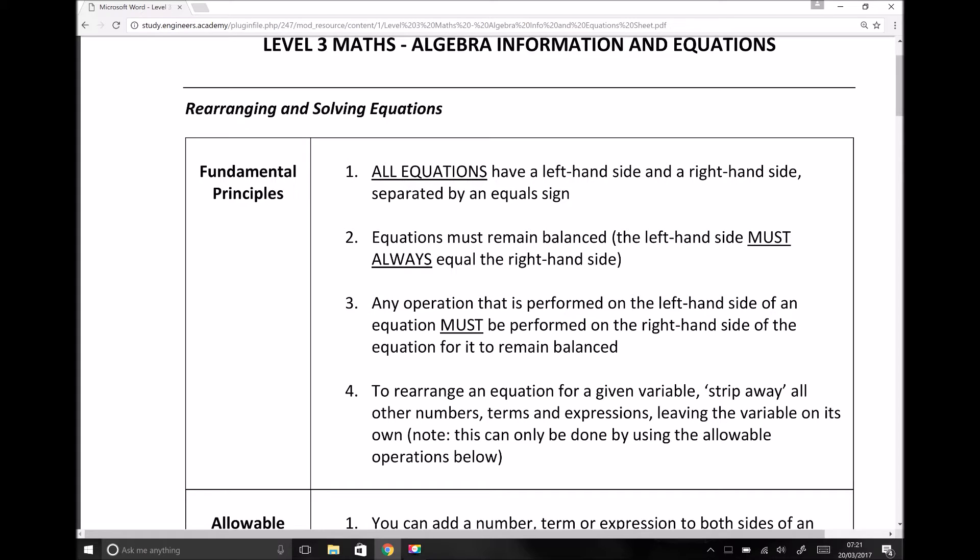Think of it as a set of weighing scales, where anything we add to one side, we must add to the other to keep it balanced. We could double the contents on the left-hand side, but then we would have to double the contents on the right-hand side to keep it balanced, and so on. And that principle also applies to equations.